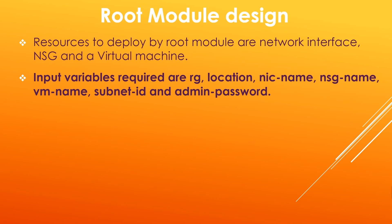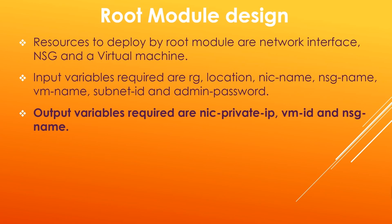We also need subnet ID and admin password as inputs. We can generalize further by creating more input variables like VM image reference, VM size, admin username, managed disk, and other variables — you can do this as an exercise. For output variables, we need the network interface private IP address for NSG rules, the VM ID required to deploy a web server extension on the VM, and the NSG name. We can export the attributes of resources as per our requirements.